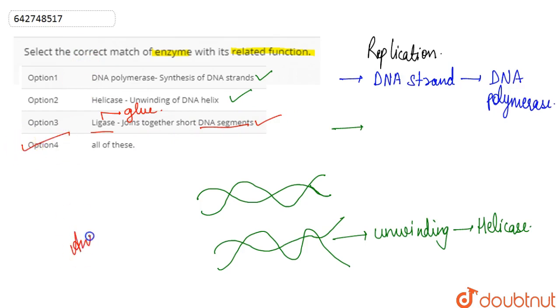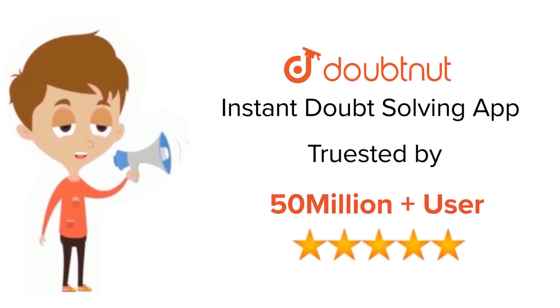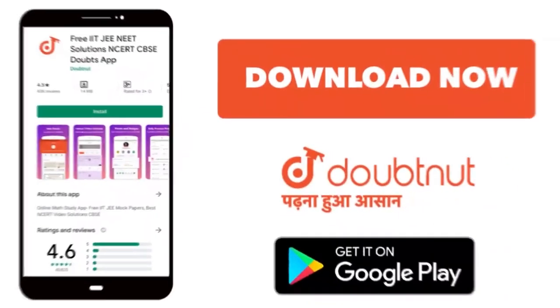So the correct answer is basically option four. For class 6 to 12, IIT-JEE, and NEET level, trusted by more than 5 crore students. Download Doubtnet today.